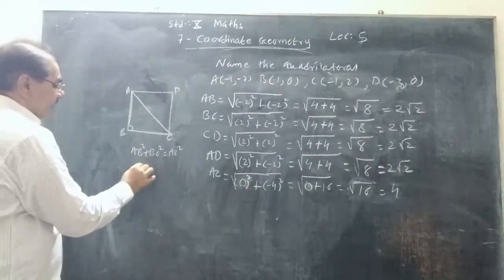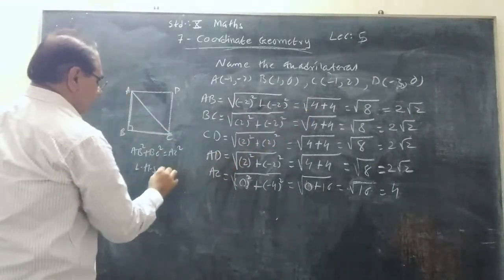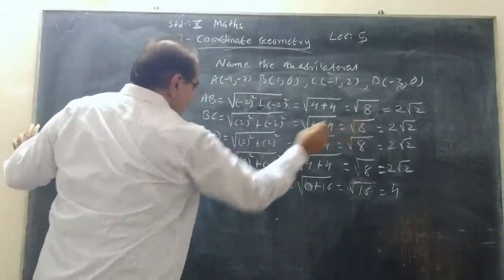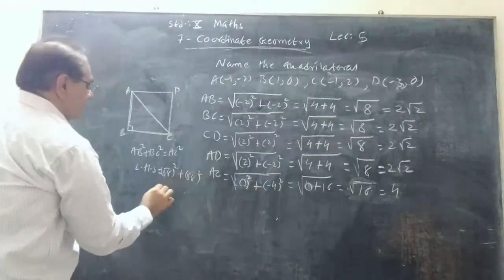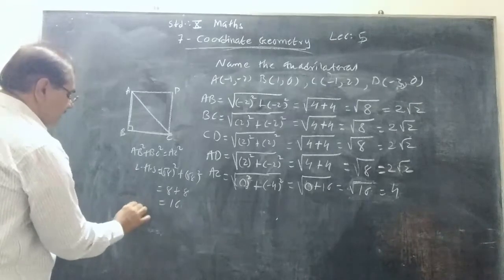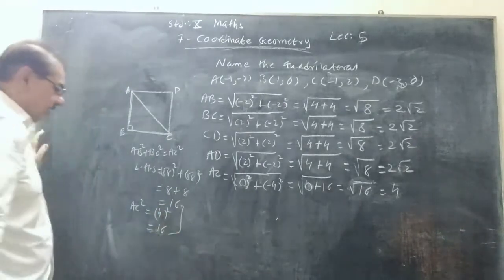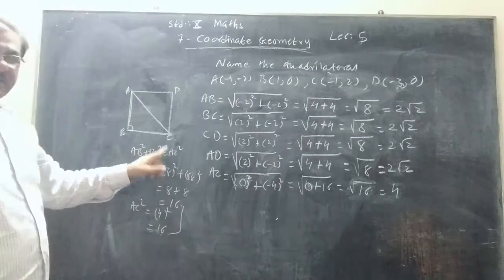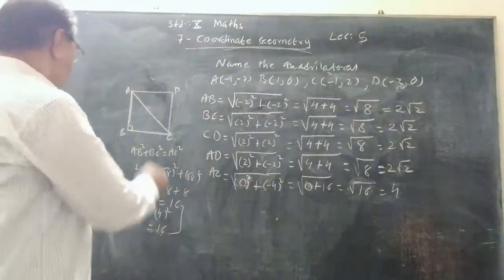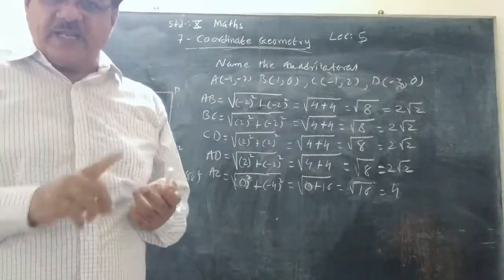Now let us go for the left-hand side: AB² + BC². AB is √8, so AB² = 8. BC is also √8, so BC² = 8. AB² + BC² = 8 + 8 = 16. Now AC = 4, so AC² = 16. Both are equal, so AB² + BC² = AC² is established. Therefore, it is a square, because every angle is a right angle and all four sides are equal.